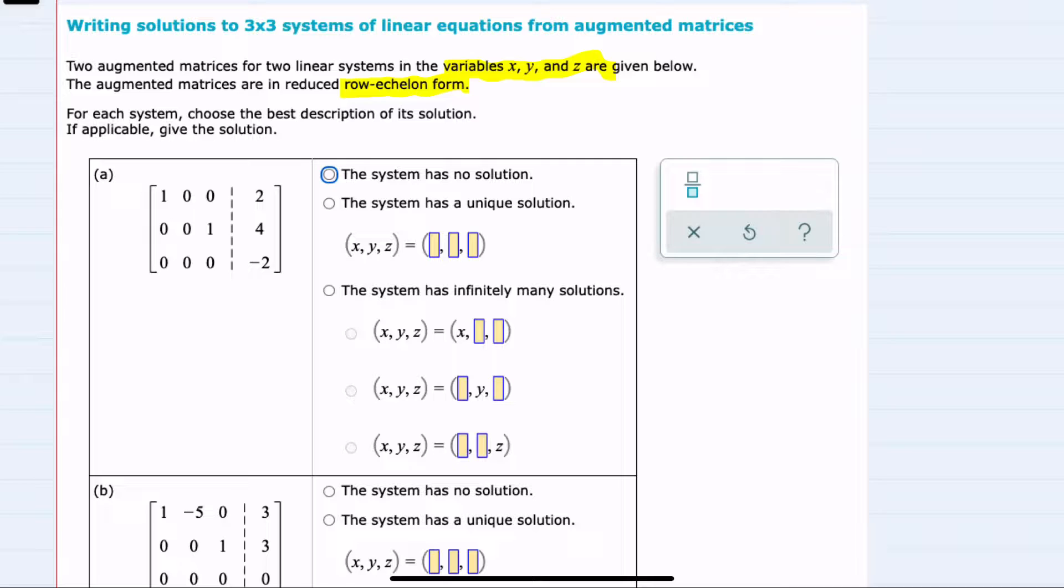From this format, we know that our first column represents the x's in our system of linear equations, the second y, and the third z.